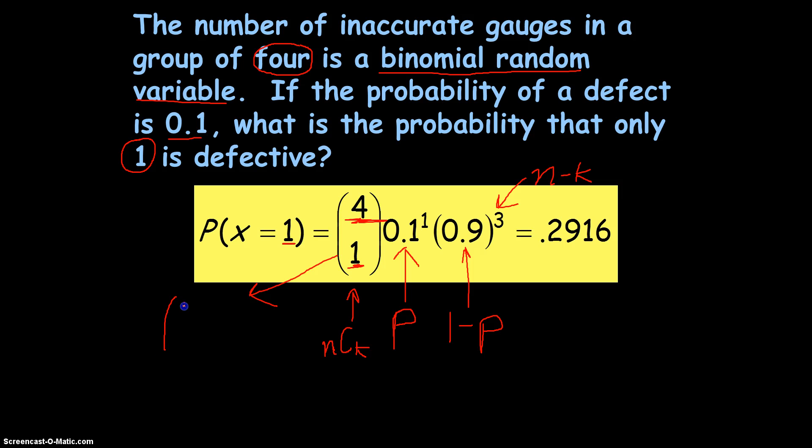So, 4 choose 1, is saying 4 factorial over 1 factorial times 4 minus 1 factorial. And that simplifies, assuming you know how to do factorials. If not, just give them a quick Google, they're not too hard. That simplifies to 4. And so, now we can plug in. It'll be 4, we can just take that equals 4.